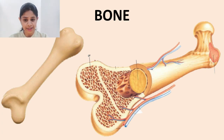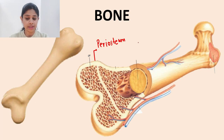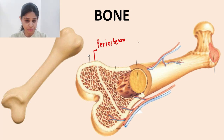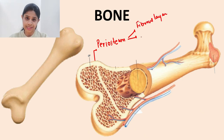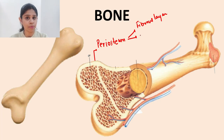The first layer is a layer of periosteum. Periosteum is basically a very thin dense membrane which helps to protect the underlying bony structures. It is made up of two layers: the first is a fibrous layer, whereas the second layer, which faces the internal surface of the bone, is made up of pluripotent stem cells.